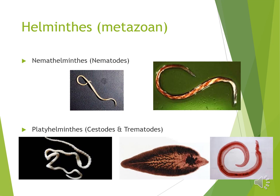Under the next class, metazoa, come the helminths. There are two types of helminths. First, Nemathelminths, where nematodes or roundworms are present — mostly in tissues and intestines, and they have migrating movement. Second, Platyhelminthes — these include cestodes, which are segmented worms, and trematodes, which are leaf-like structures mostly present inside the liver, blood, and sometimes the rumen. Platyhelminthes are present inside the intestine as well as inside the tissues.